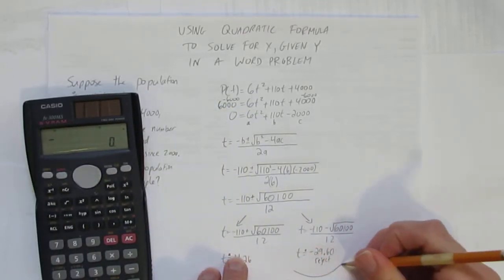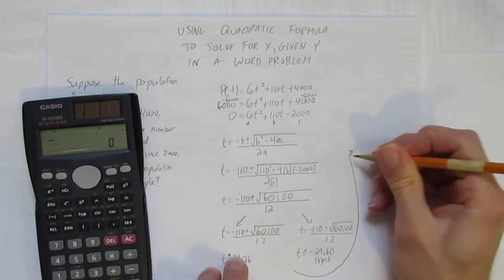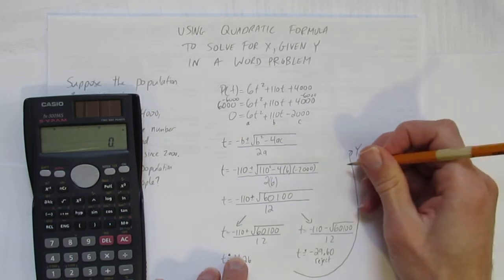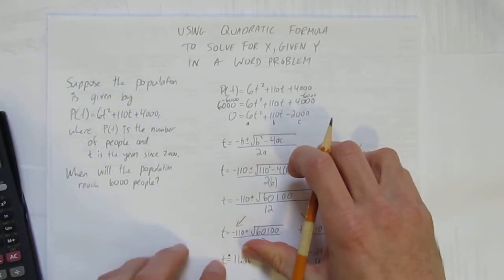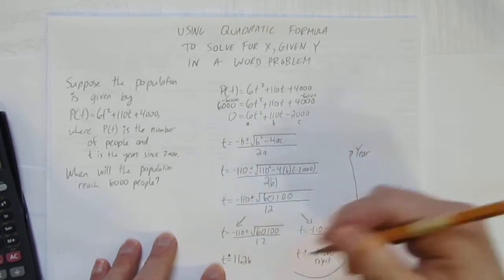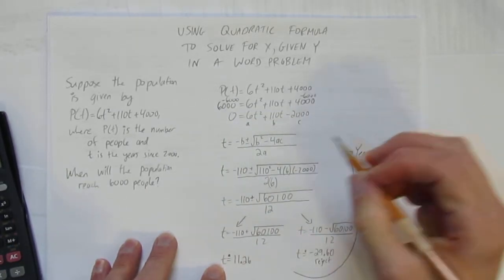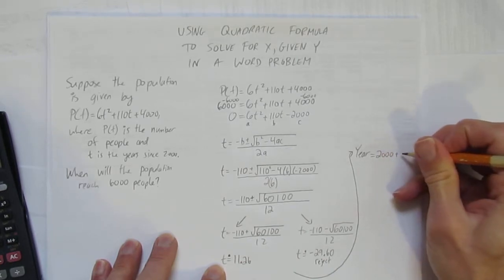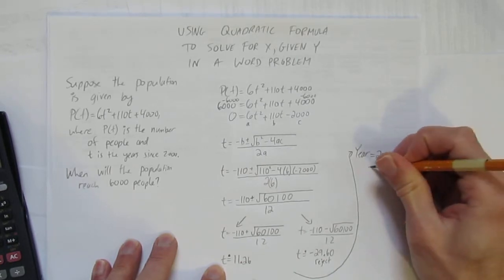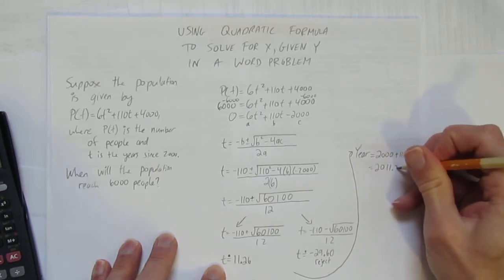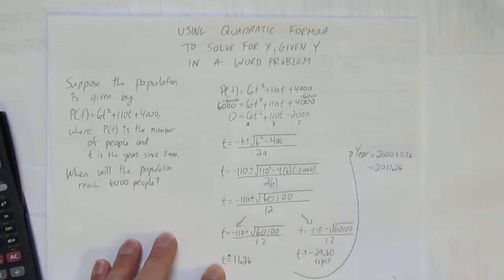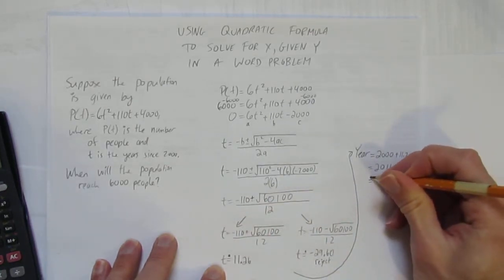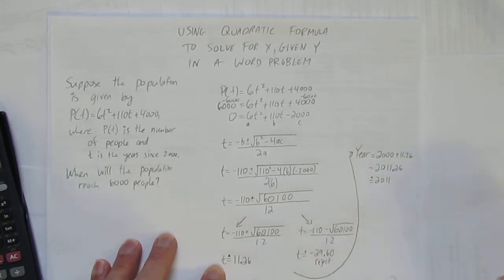We're not quite done though. I'll put an arrow for the reader that my work continues. I have to figure out what year it is—it's easy math but you should show your work. To calculate the year: t is the years since the year 2000, so I do 2000 plus 11.26, which equals 2011.26. I'll round to the nearest year, which is 2011.